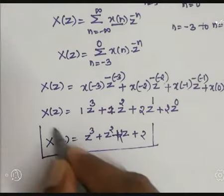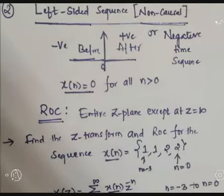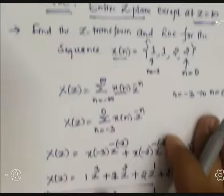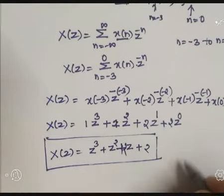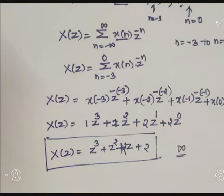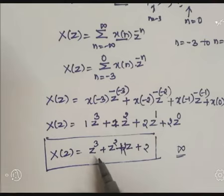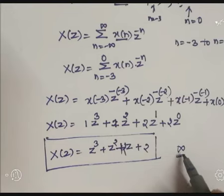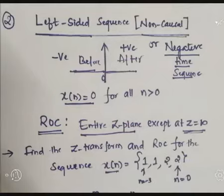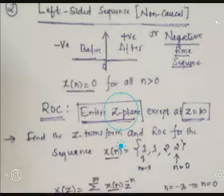This is the Z-transform for the given sequence. For a left-sided sequence, or non-causal sequence, or negative time sequence, the ROC is the entire Z-plane but except Z equal to infinity. Because if you substitute Z equal to infinity in this result, we get an infinite result. Convergence means existence — there should be a finite result. Because of that reason, for a left-sided or non-causal sequence, the ROC is the entire Z-plane except Z equal to infinity.